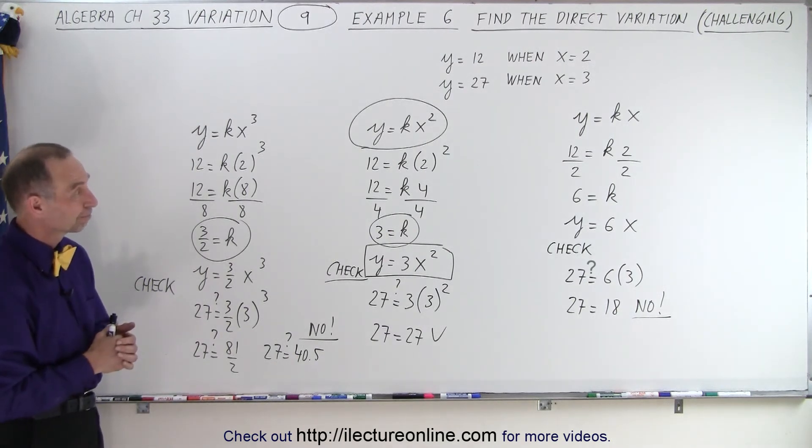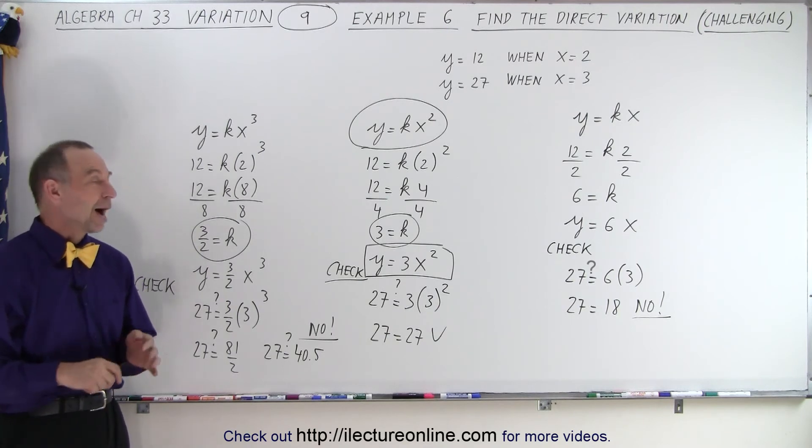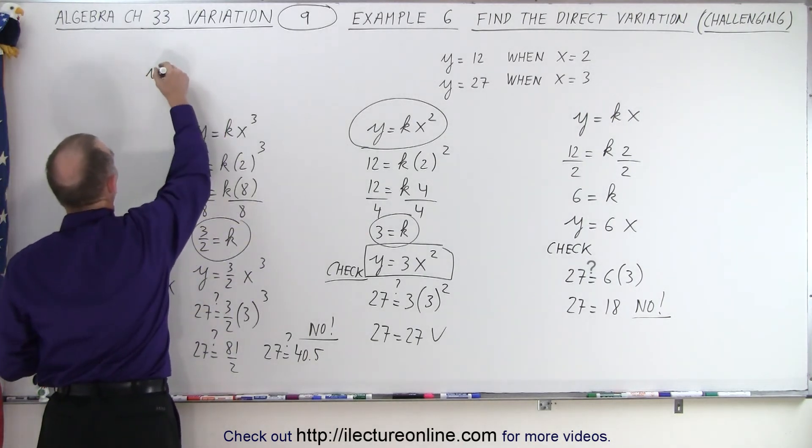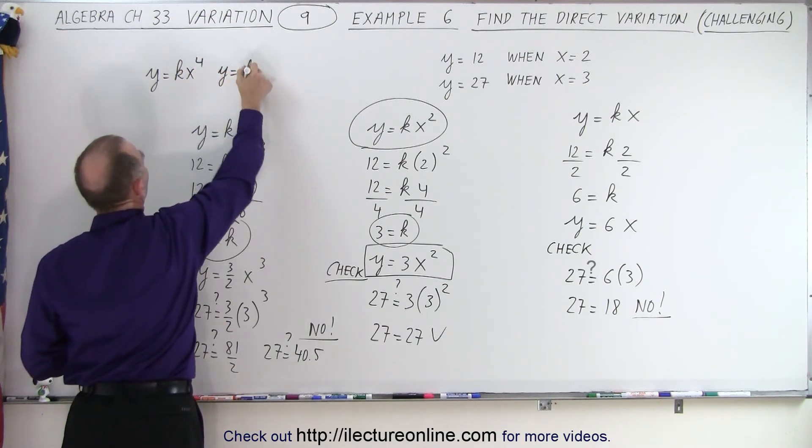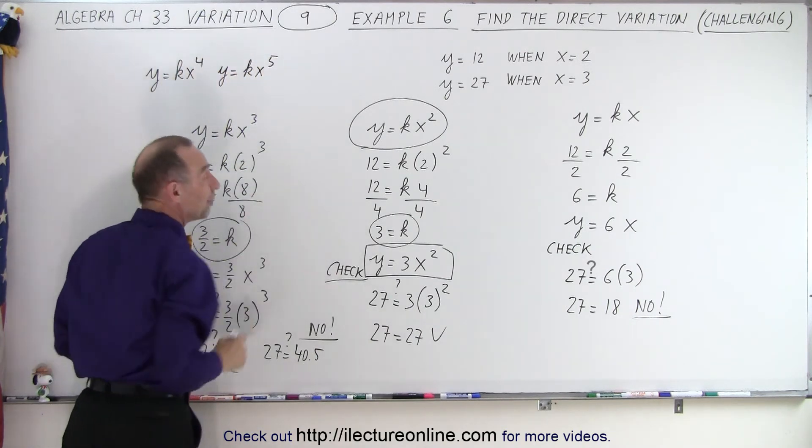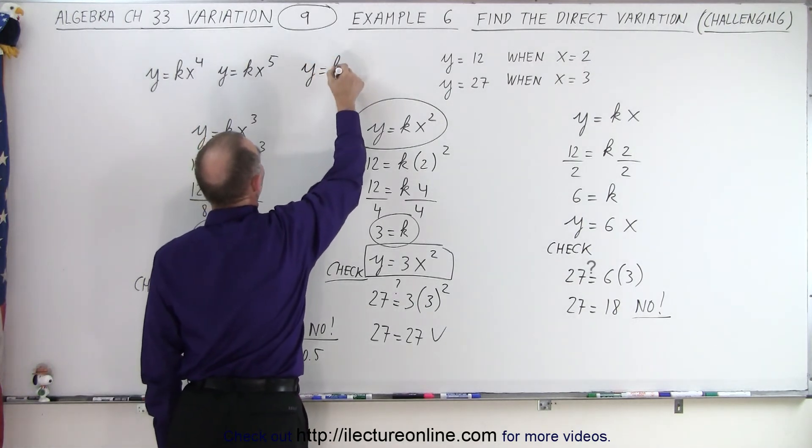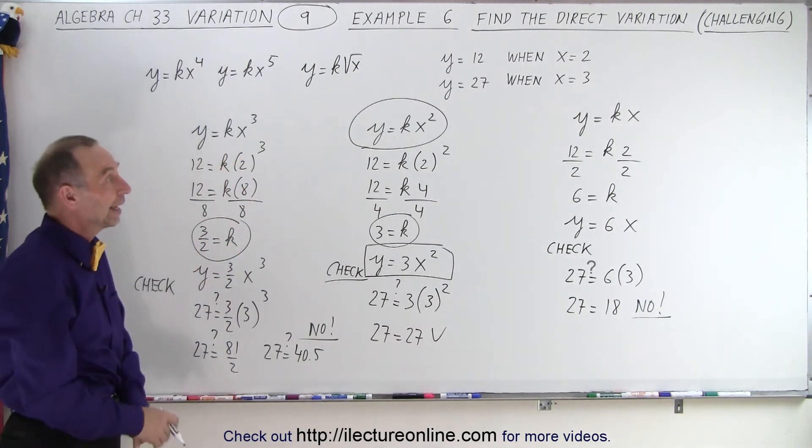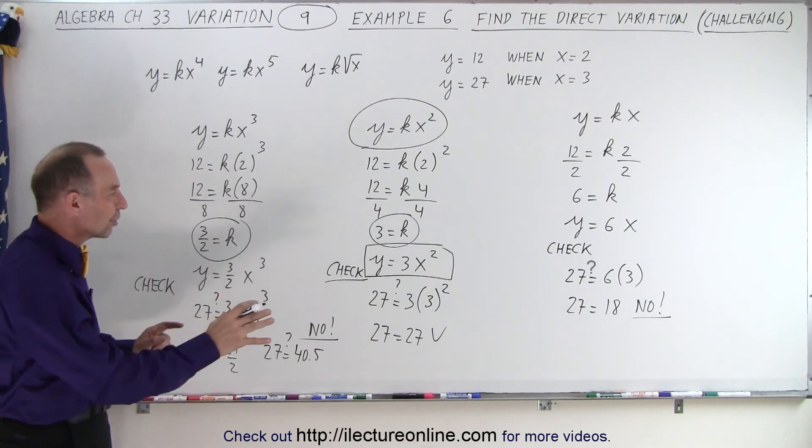How do you know that it won't be kx to the 4th, kx to the 5th? So how do you know, is the question, that it's not another equation? For example, what about y equals kx to the 4th, or y equals kx to the 5th? And let me add another one. How about, could it be y equals k times the square root of x, or something like that? And the answer is, it could.